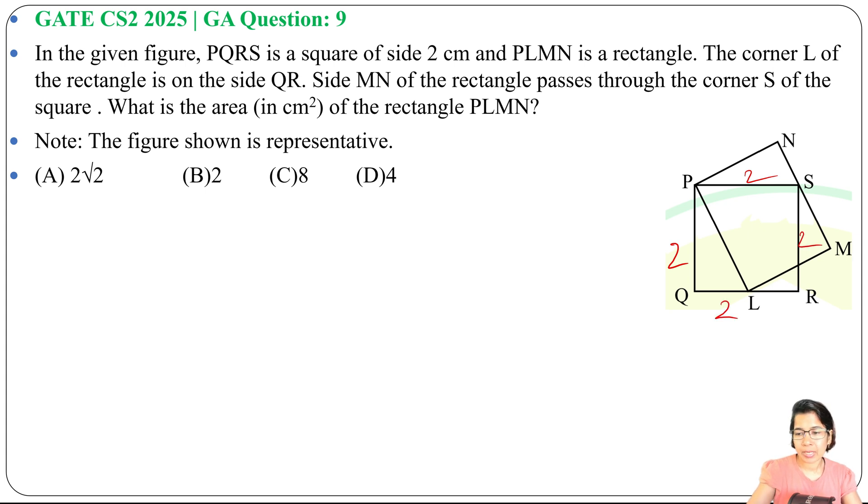So area of square is length squared, so 2 squared, it's 4 cm squared. Now we need to find area of this rectangle PLMN. Area of rectangle equals length into breadth. Let's take PL multiplied by PN.